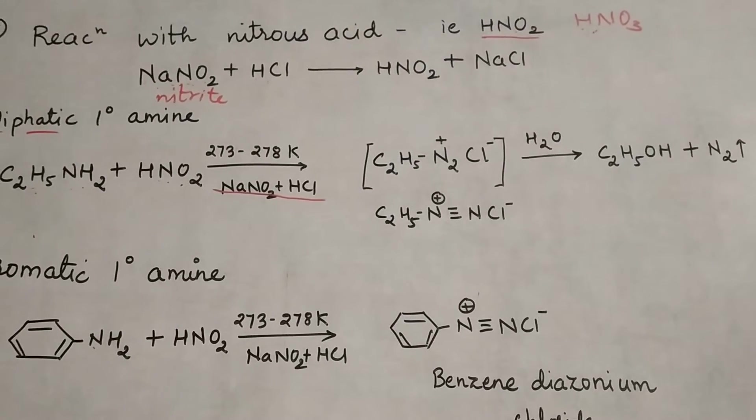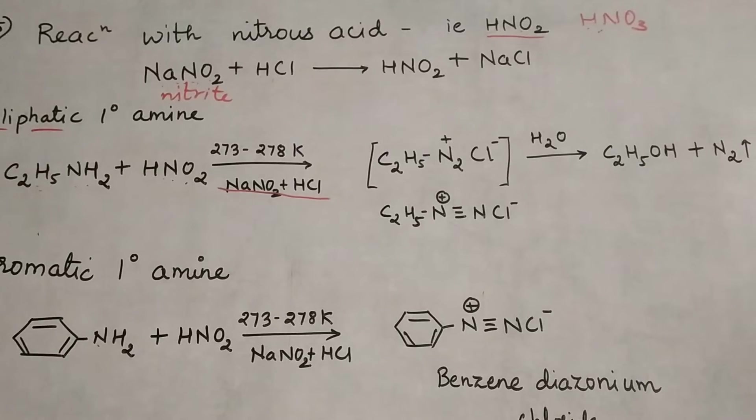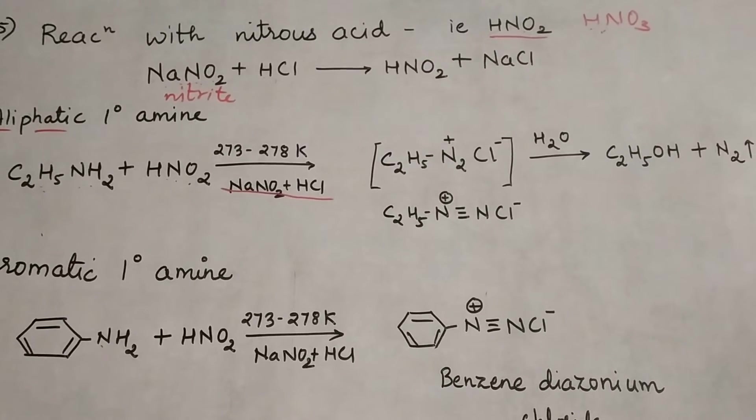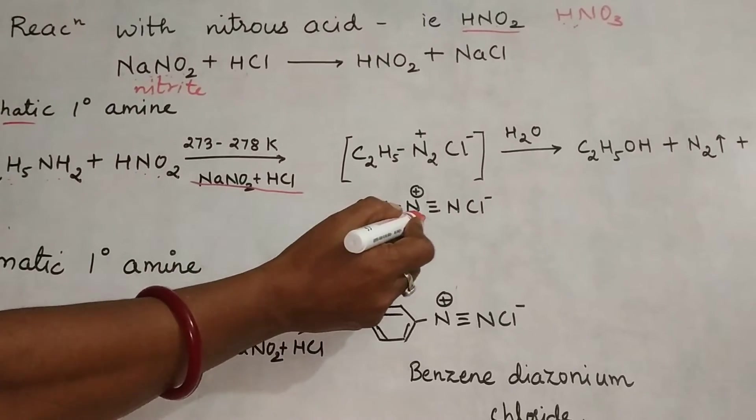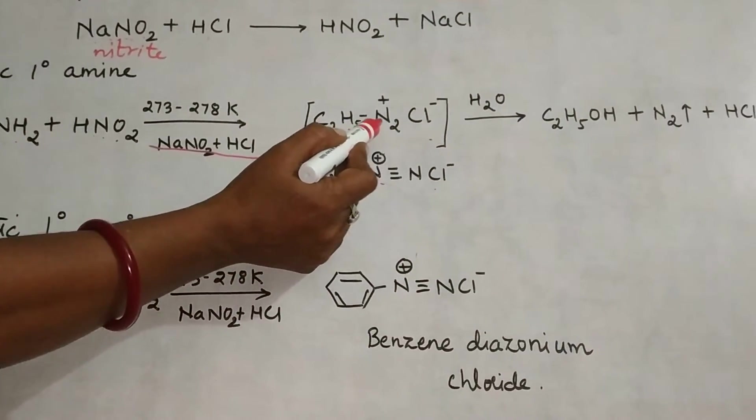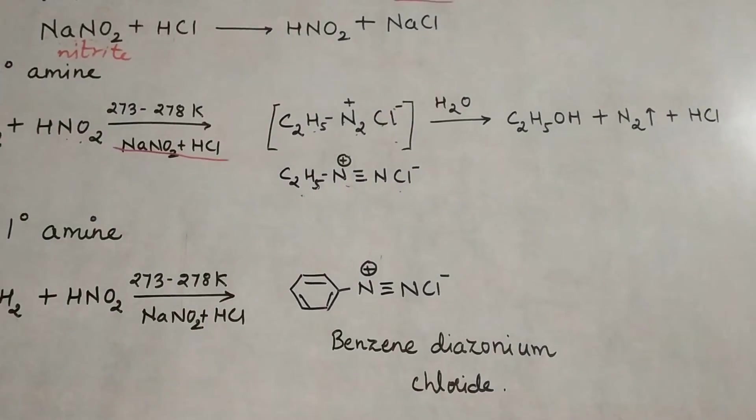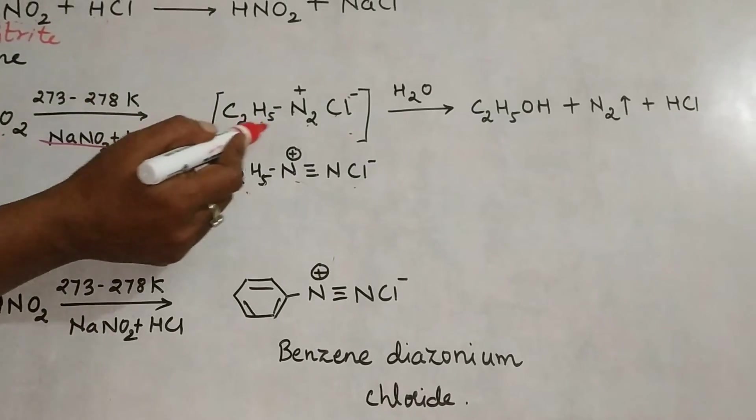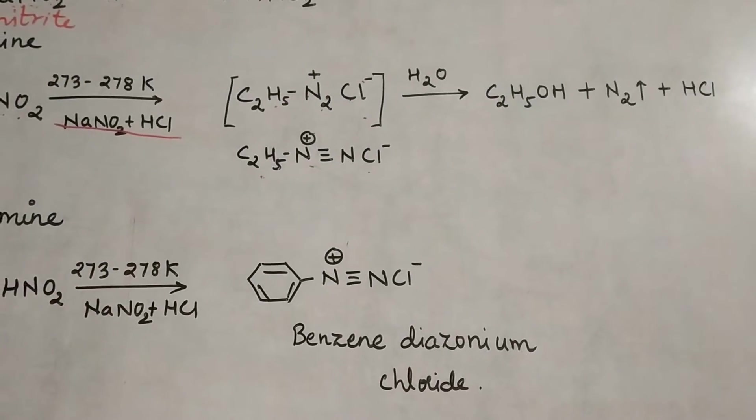This mixture generates HNO2, and the nitrous acid combines with the amine to form a diazonium salt. Diazonium chloride is formed—ethane diazonium chloride. The compound structure is C2H5-N2+ Cl−.